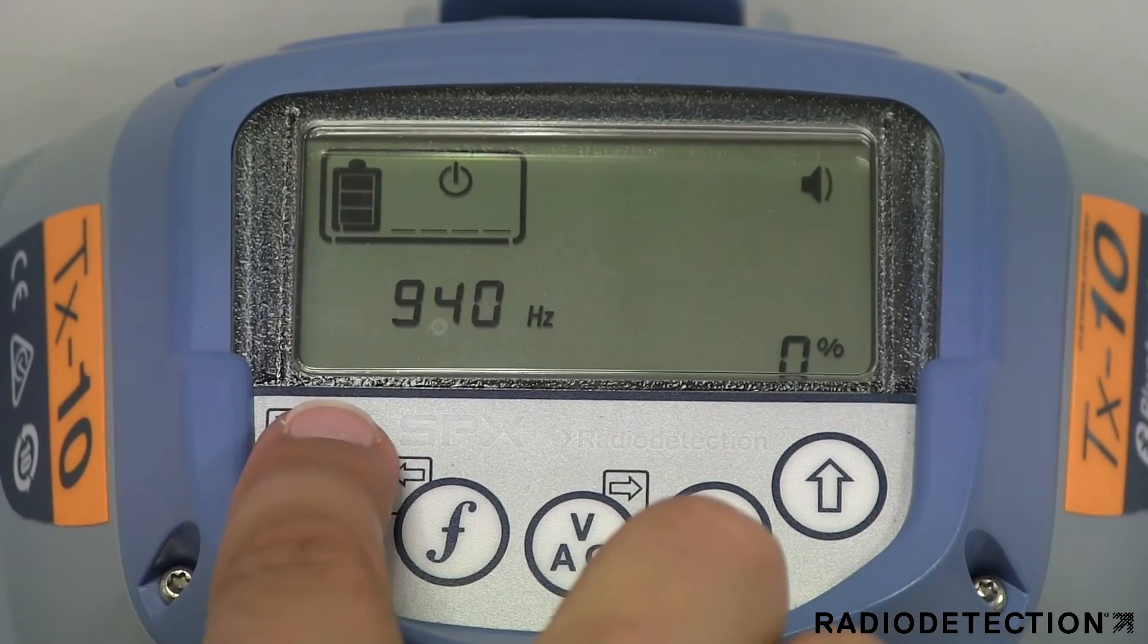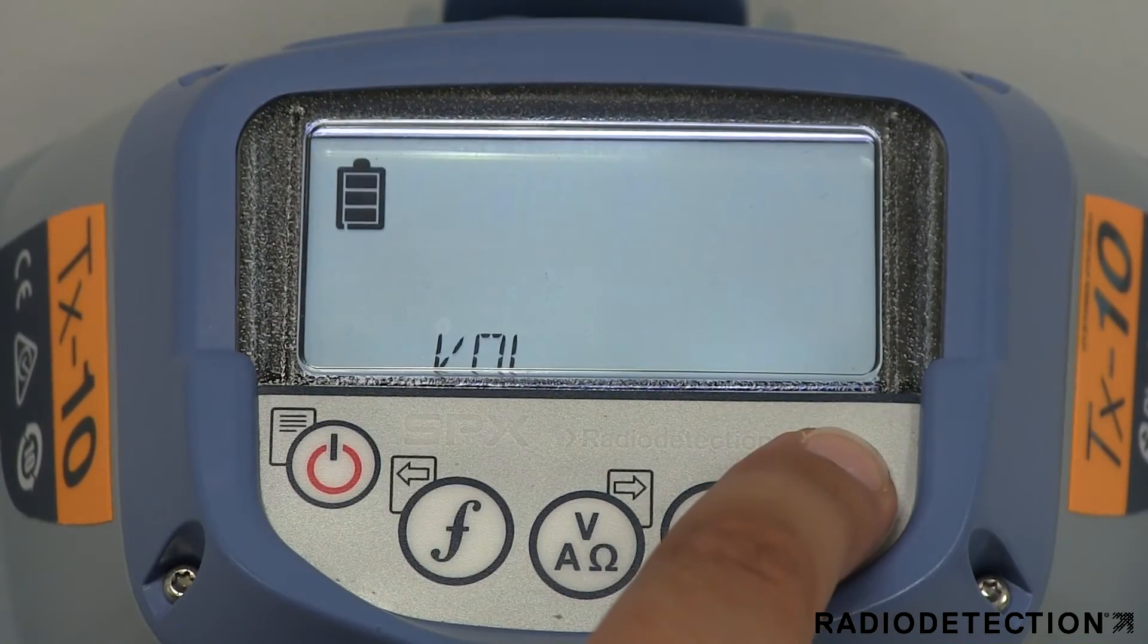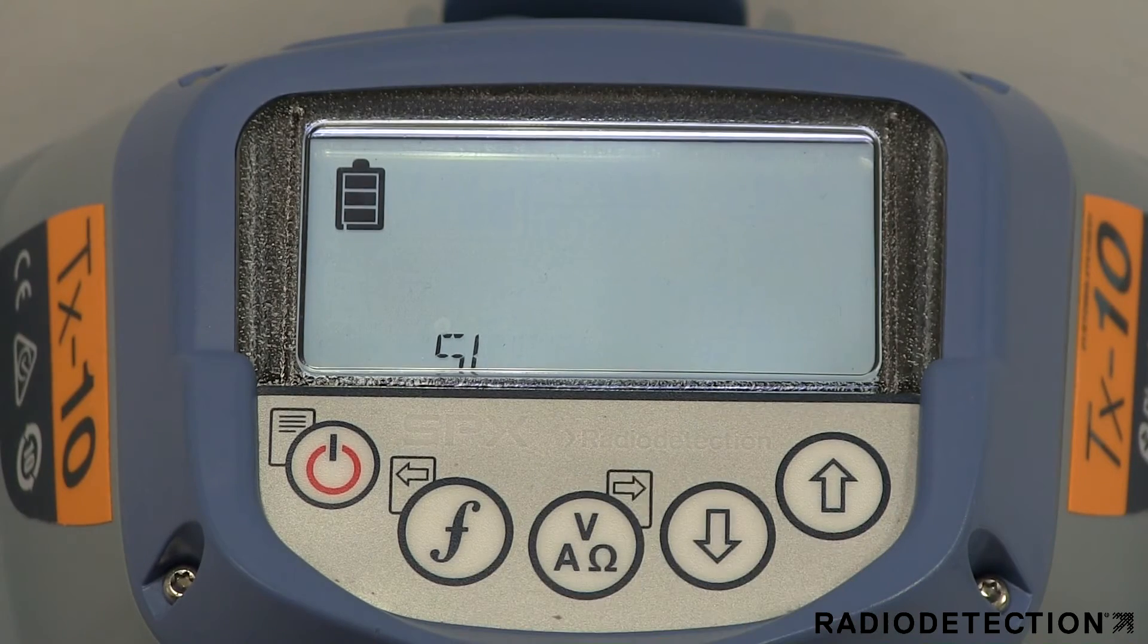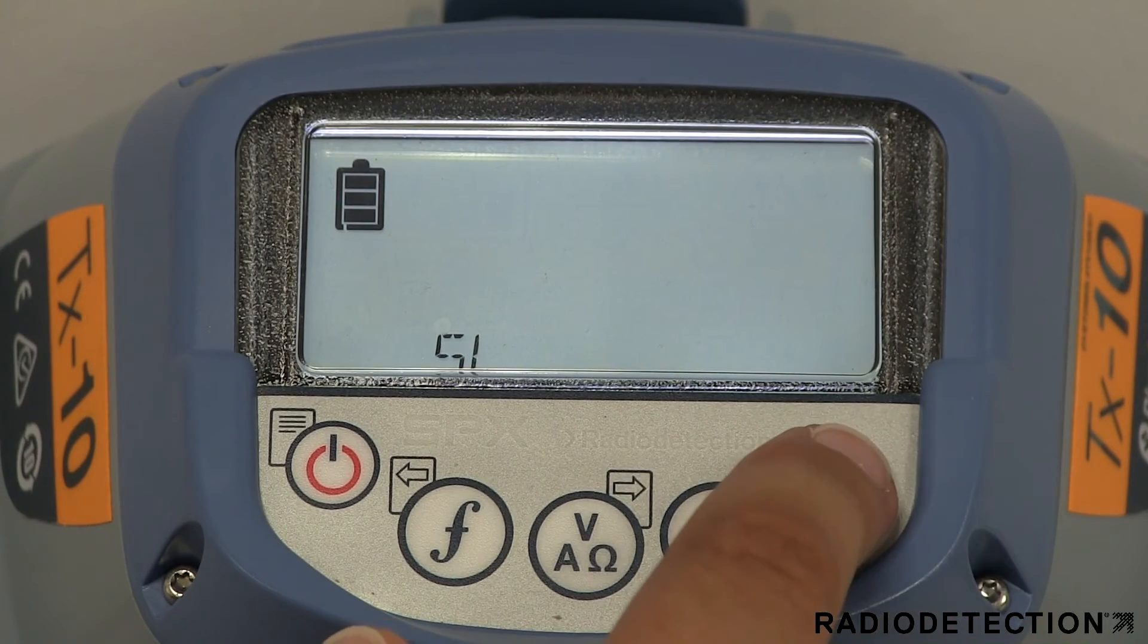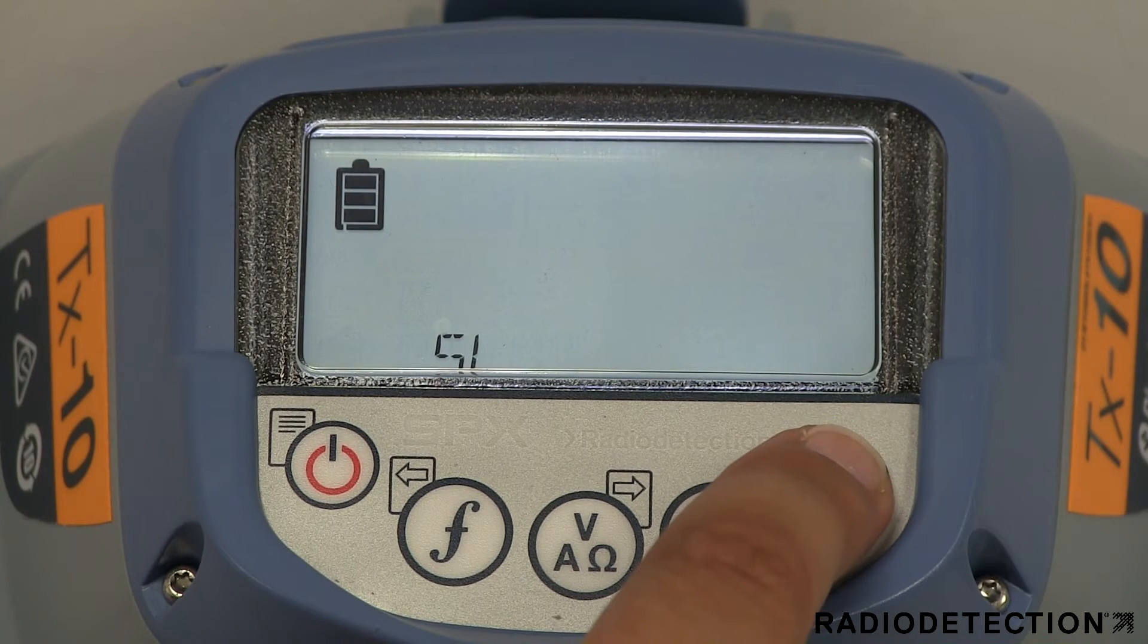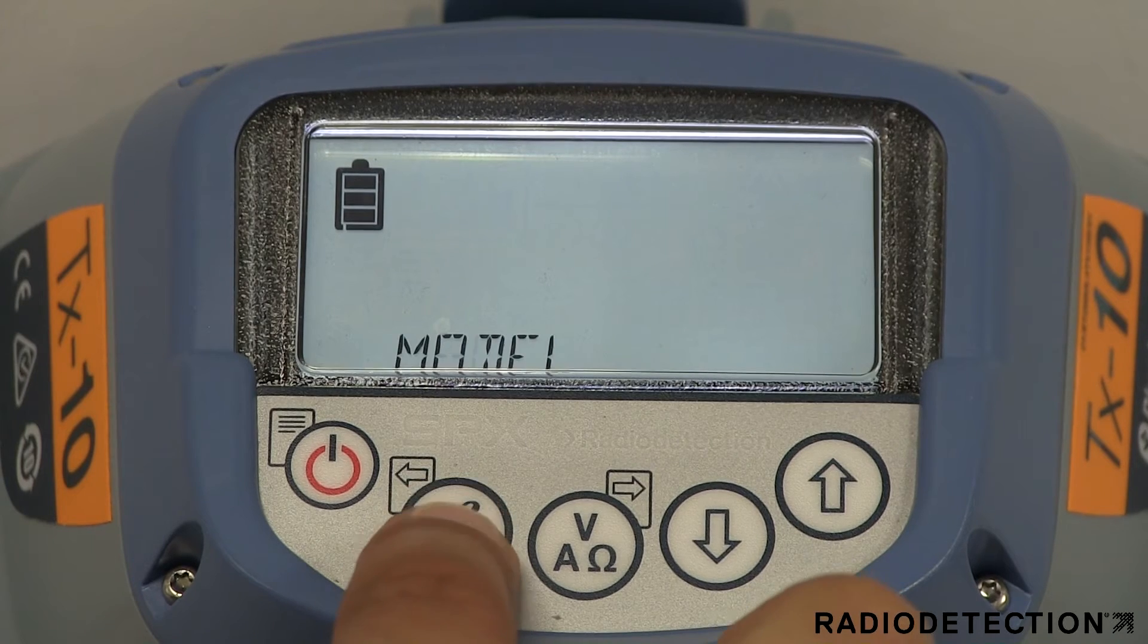The model menu allows you to tell the transmitter which locator model you are using. This will match the frequency outputs available on the transmitter to the frequencies your locator can detect. To select your locator model, use the up and down arrows to scroll through the menu and use the F key to select and save the correct locator model.